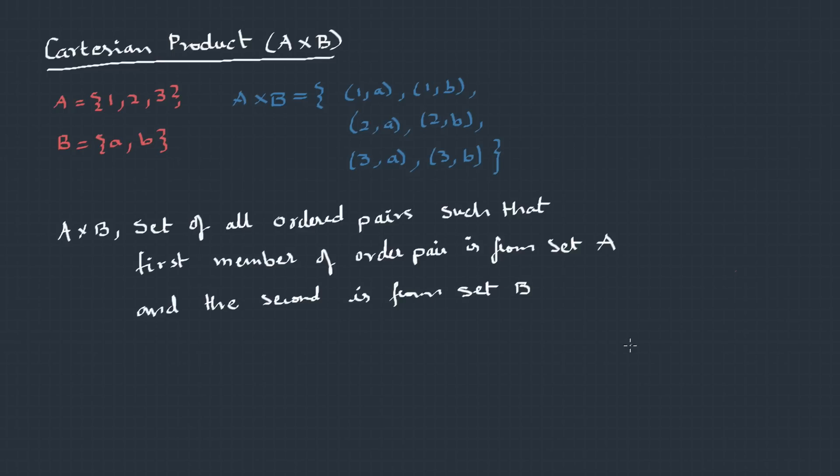Now if I have to define this, we can say it like this. It is a set of all ordered pairs, such that first member of the ordered pair is from set A and the second is from set B. So, A cross B is X comma Y, such that X belongs to A and Y belongs to B.